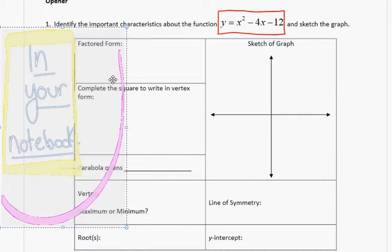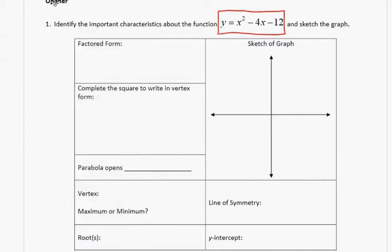We're going to change it into factored form, because factored form is going to help us find what? Yeah, which points? The roots, so the zeros. When we get into factored form, we can find out the roots.